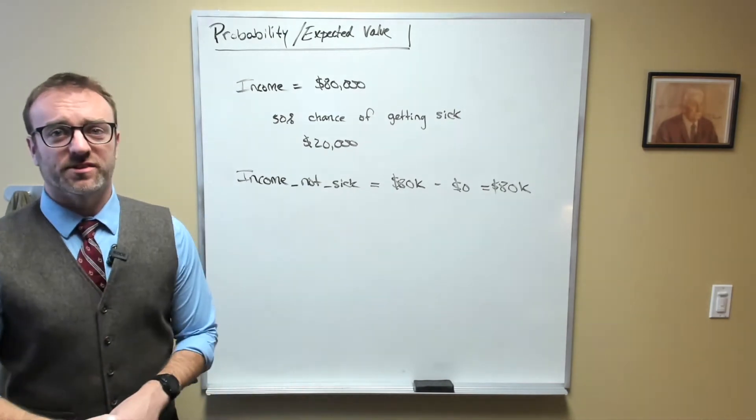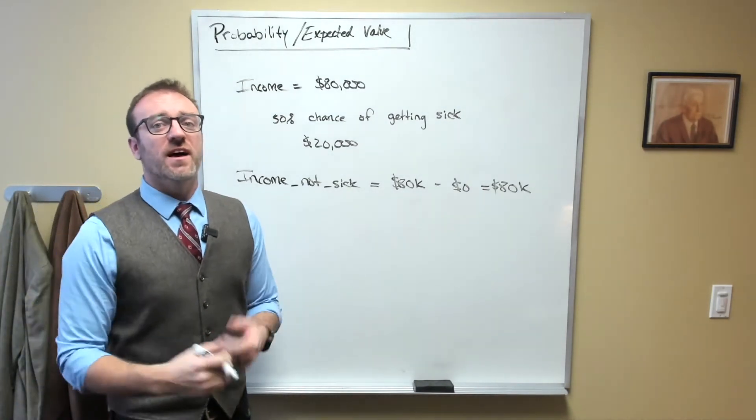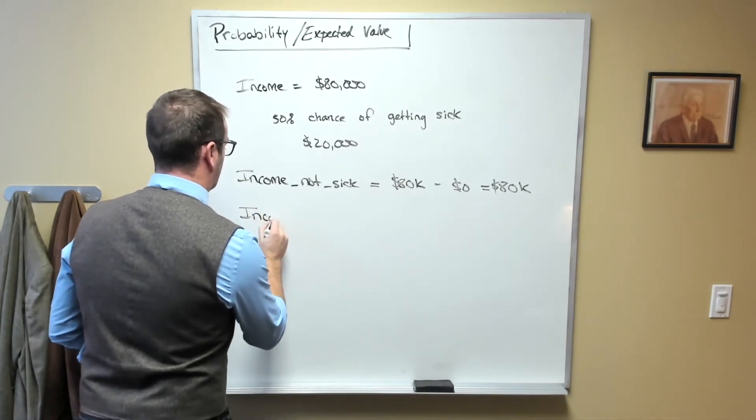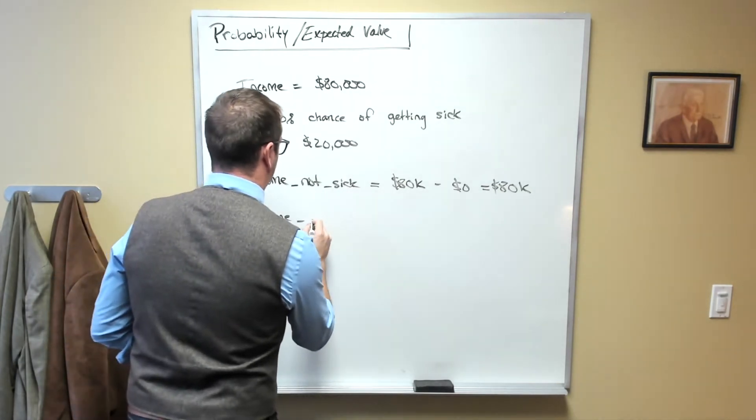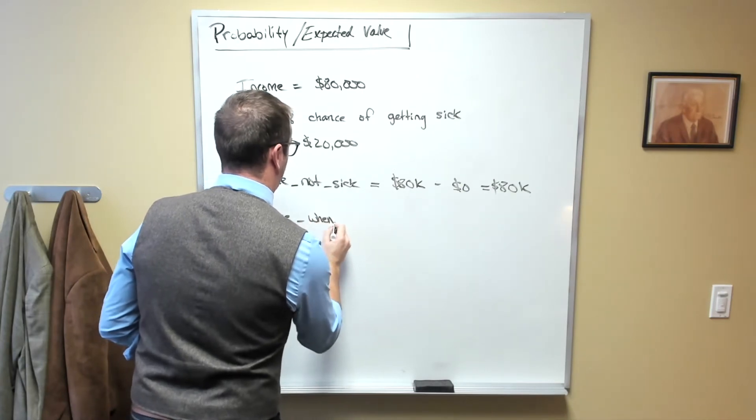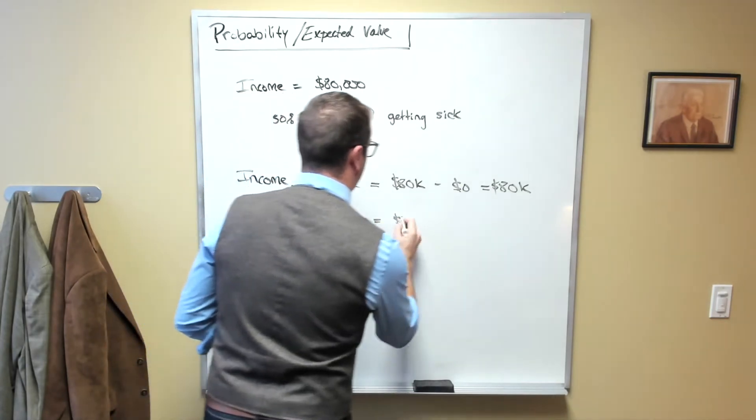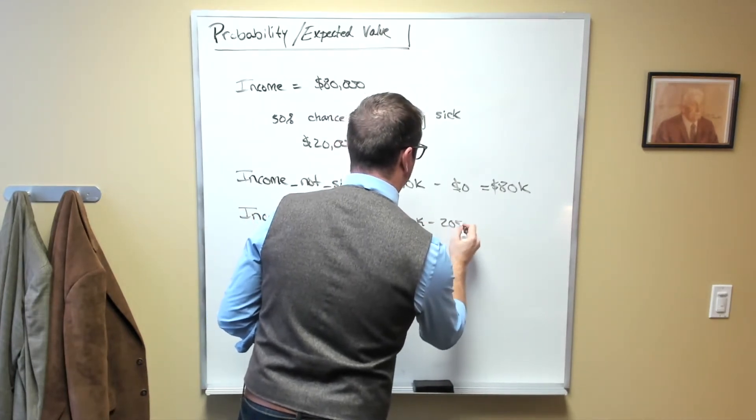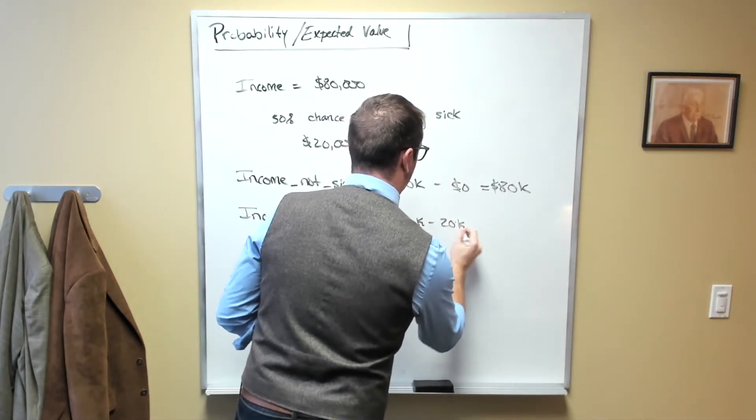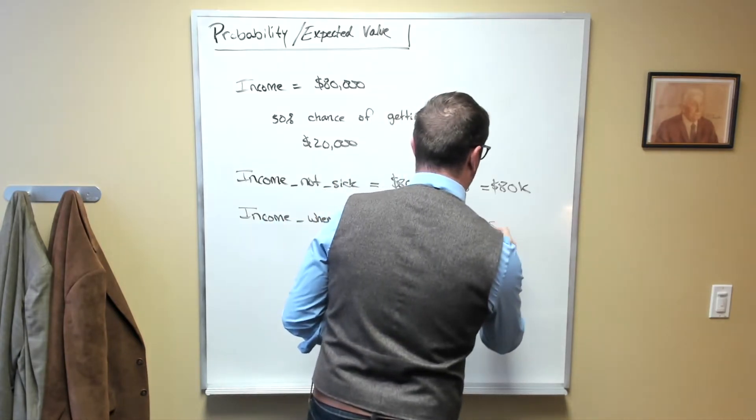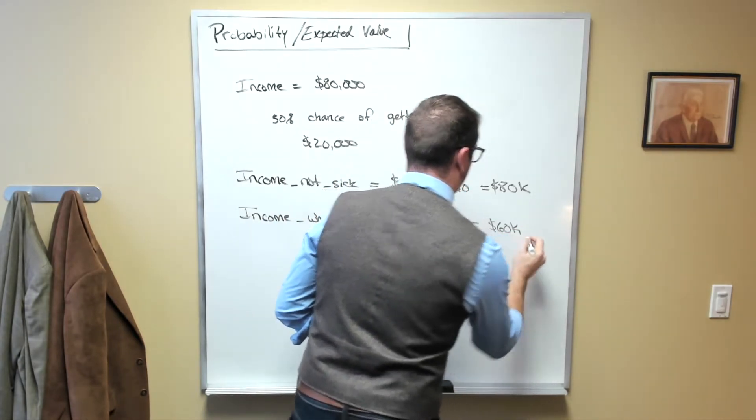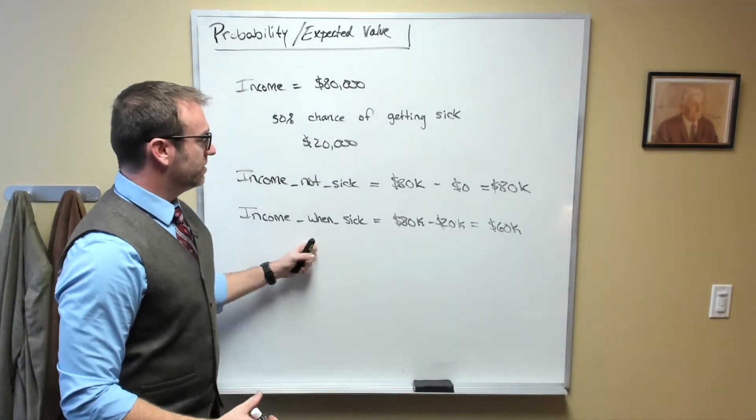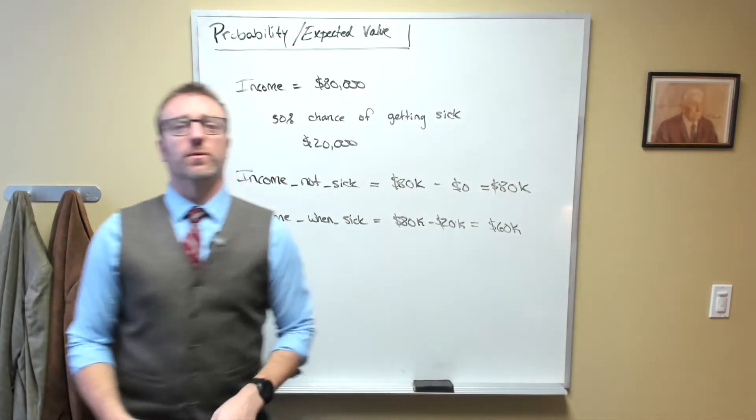If you happen to get sick, however, your income net of health payments, so income when sick would be equal to $80,000 minus $20,000 equal to $60,000. All right, because in this world where you do get sick, you have to pay the $20,000.